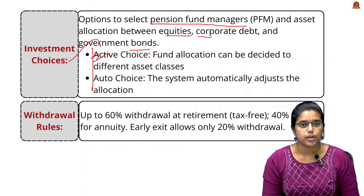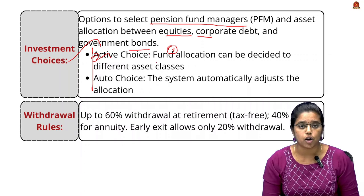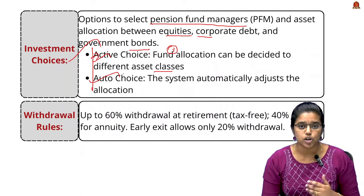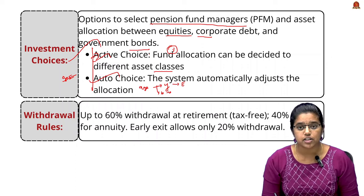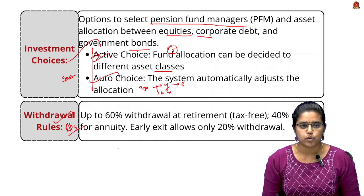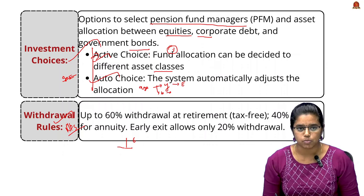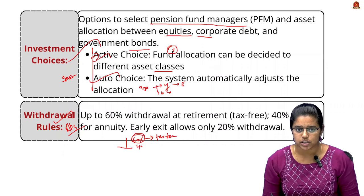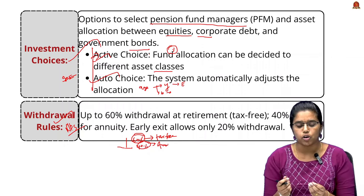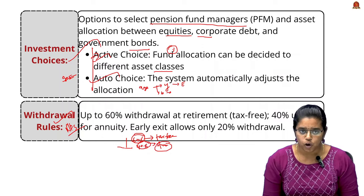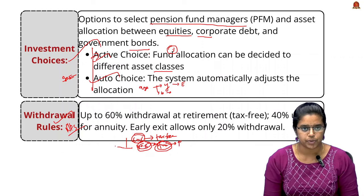Withdrawal rules under the NPS: At retirement (age 60), the subscriber can withdraw a lump sum of 60% of the corpus, which is tax-free. The remaining 40% must be invested in an annuity model — a scheme where a lump sum is invested in return for a fixed periodic income, providing the pension. If withdrawal is made before age 60, only 20% can be withdrawn and 80% must be invested in the annuity.